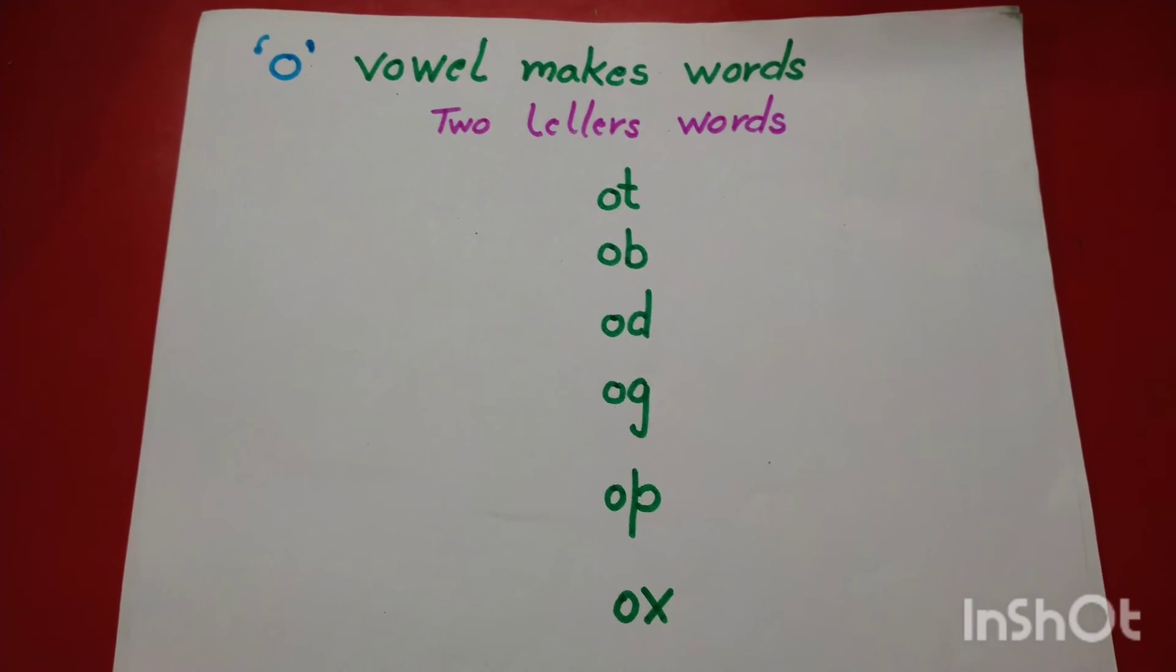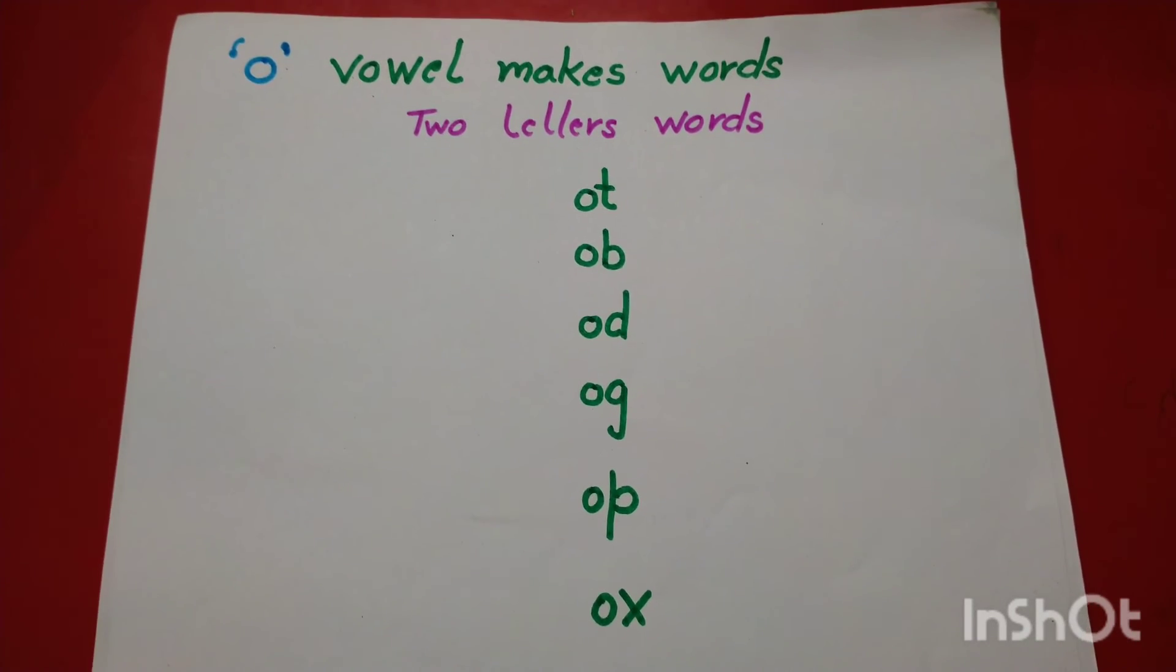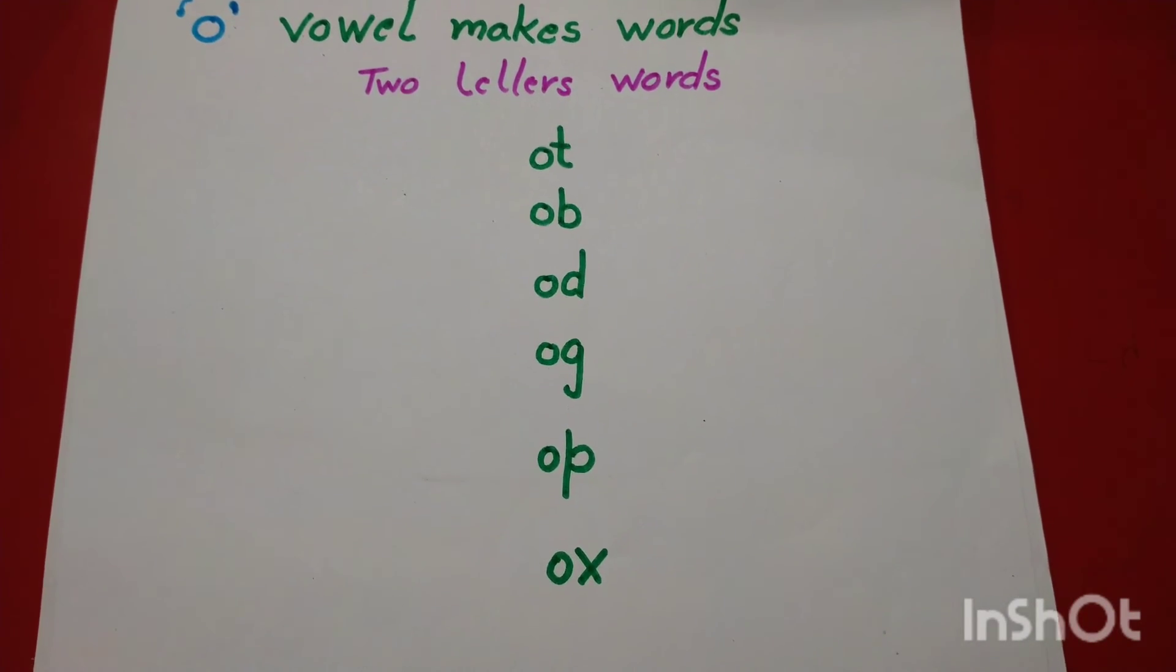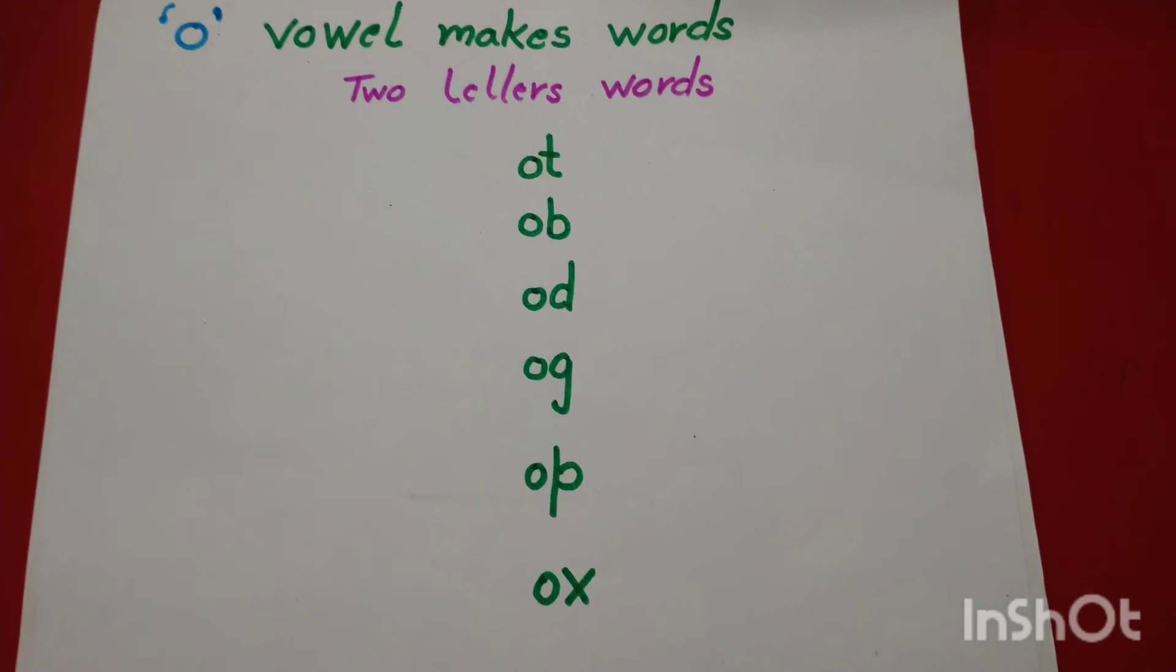Done? Now, your O vowel words is complete, two letter words is complete. Ok, bye.